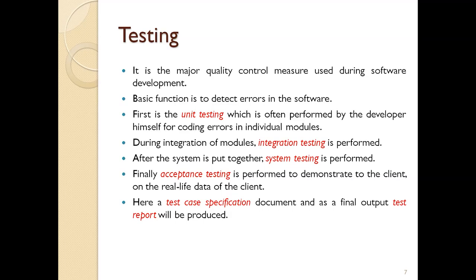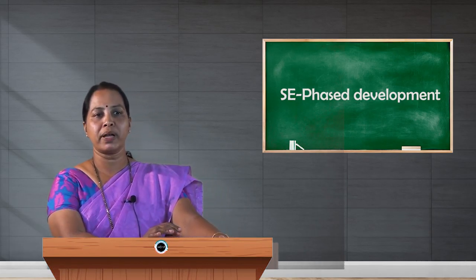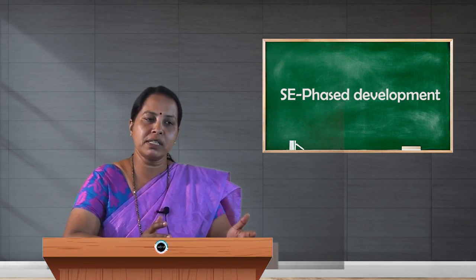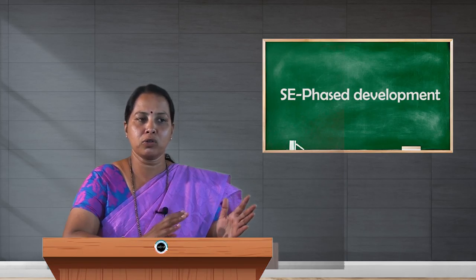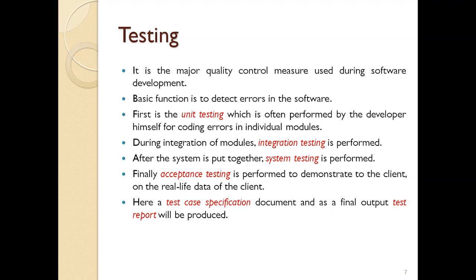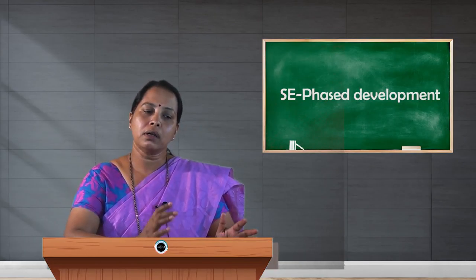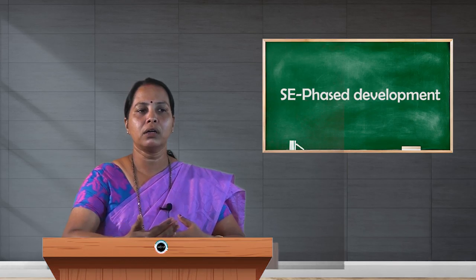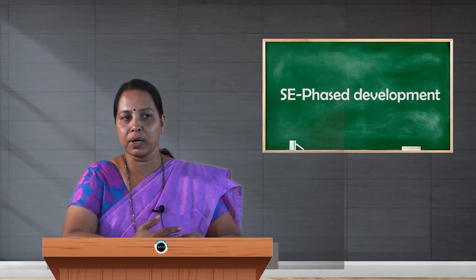The final phase of software development is testing. We can only test the software after it is ready, after coding. It is a major quality control measure used during software development, and its basic function is to detect errors in the software. First is unit testing, which is performed by the developer himself to check for coding errors in individual modules.